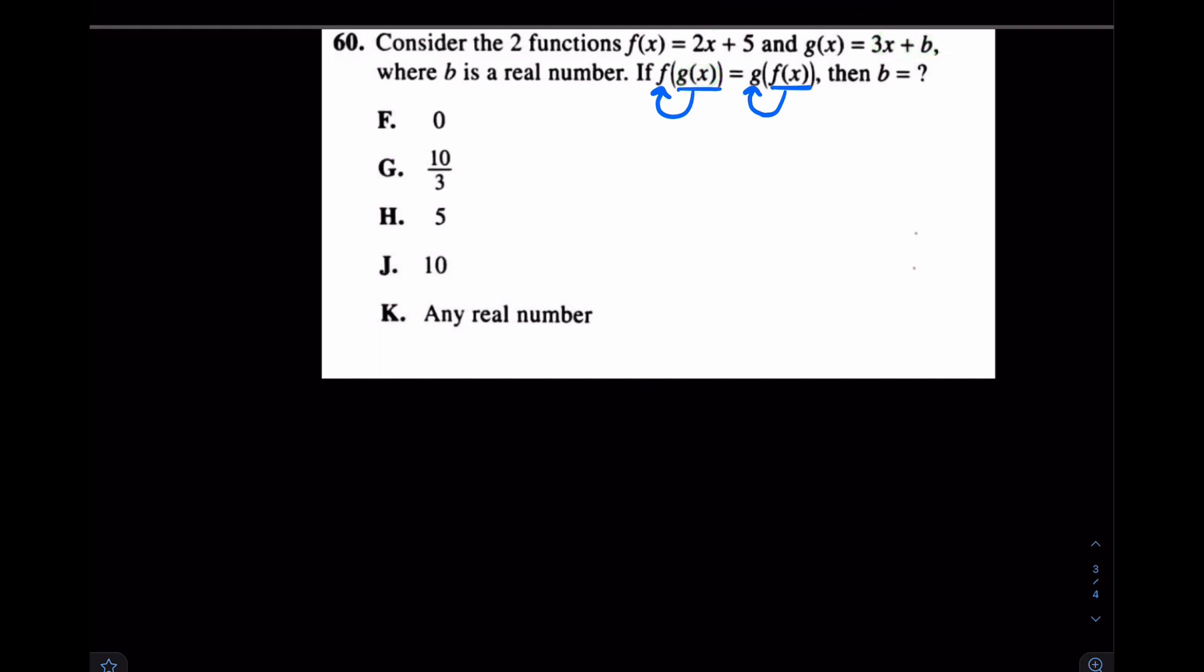So I have 2 times 3X plus B plus 5 equals, now I'm doing the right side right here. What you should see is I'm plugging F into G. Again, F into G. So I have 3 times 2X plus 5 plus B.